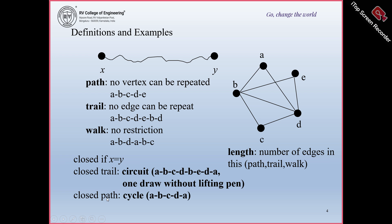A path in which the starting and ending vertices are the same is called a closed path, which is also called a cycle. In this case, there is no repetition of vertices as well as no repetition of edges. For example: A, B, C, D, A — this is your closed path, also called a cycle.